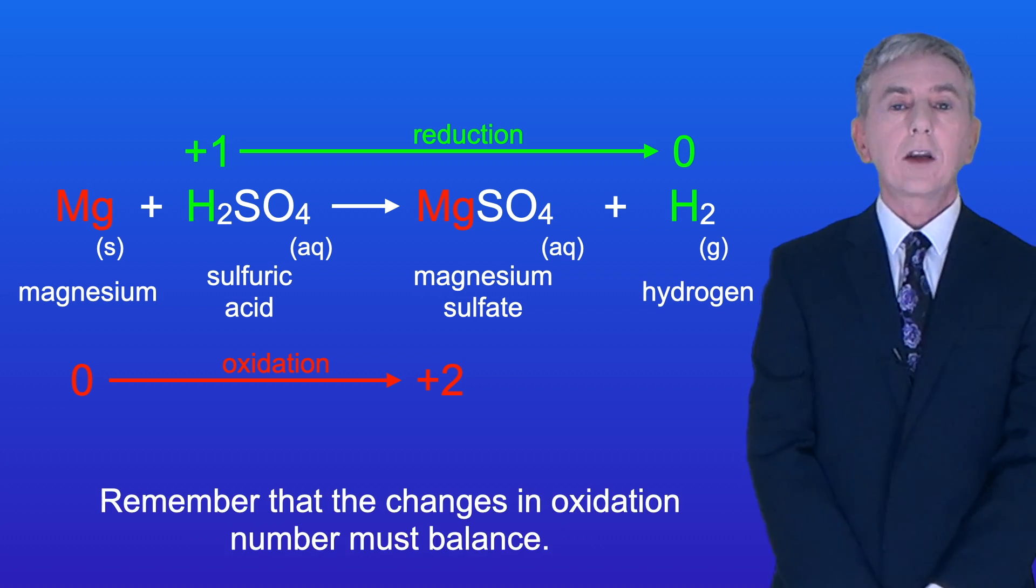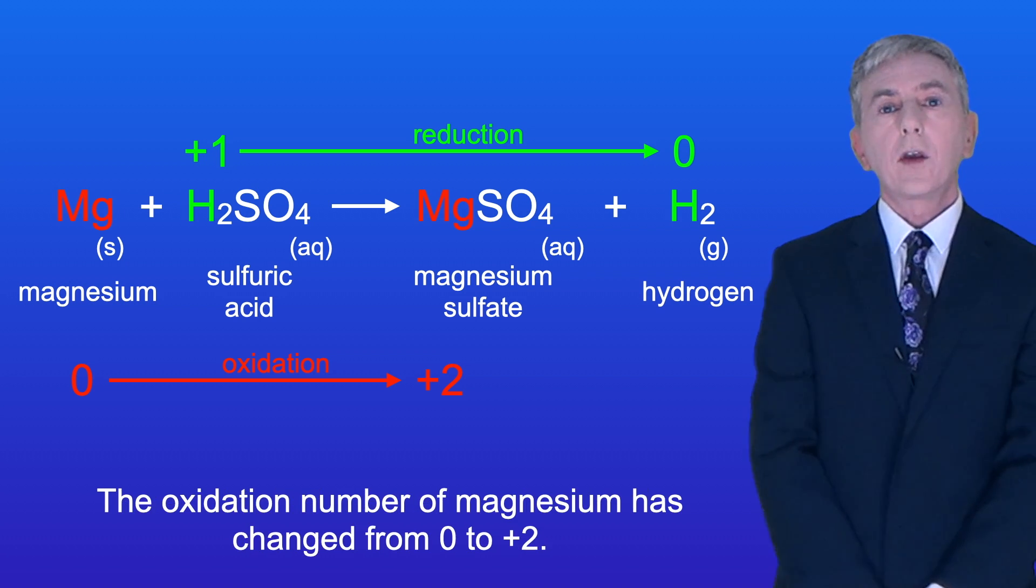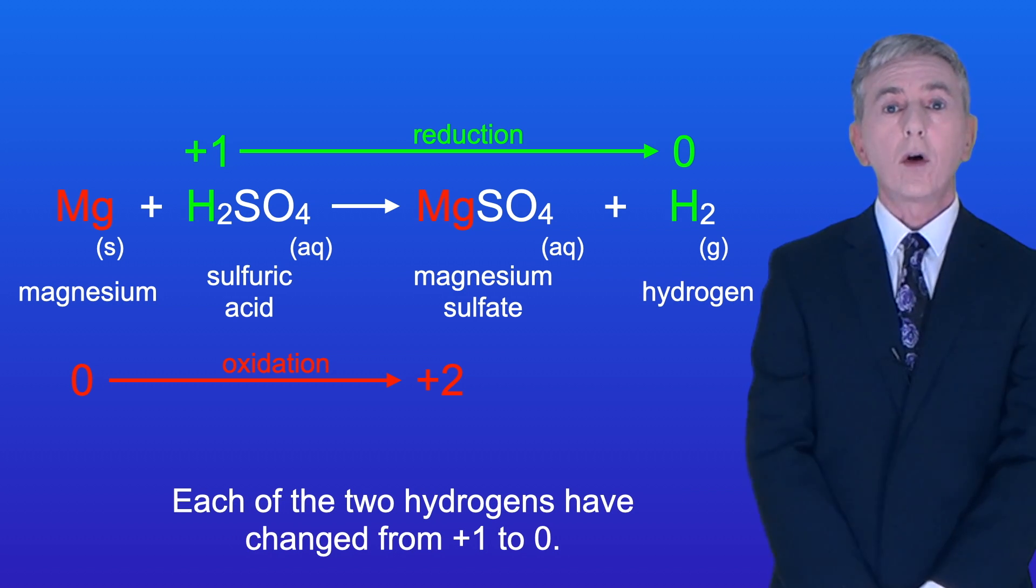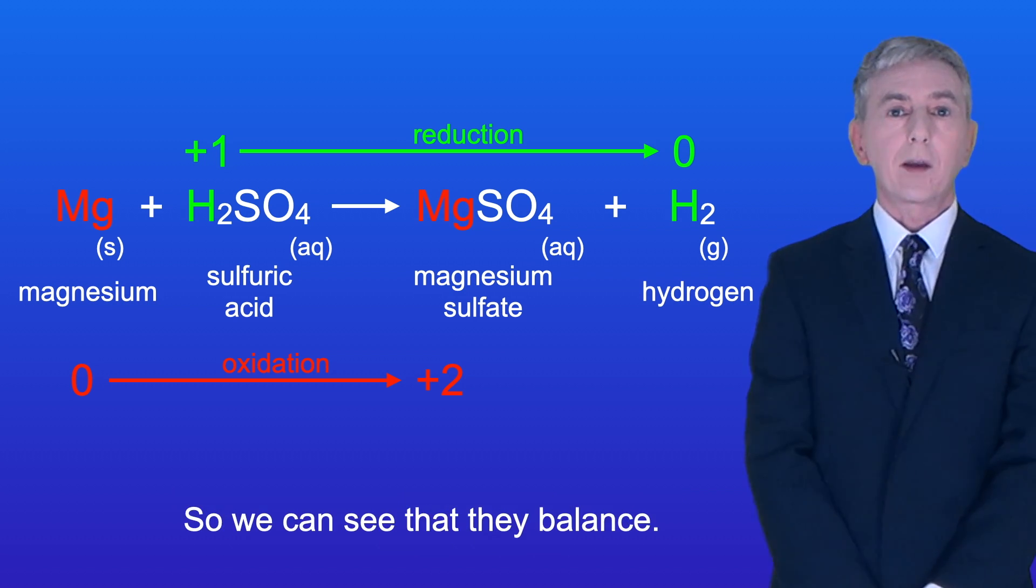Remember that the changes in oxidation number must balance. The oxidation number of magnesium has changed from 0 to +2 and each of the two hydrogens have changed from +1 to 0, so we can see that they balance.